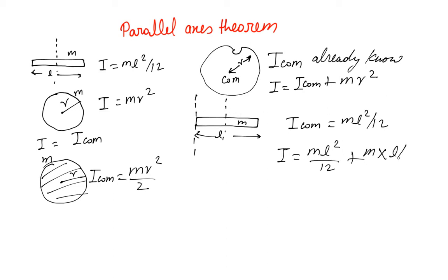That gives us ml²/12 plus ml²/4, and that gives us ml²/3. We already have derived this formula before. So once we know I_com, we do not have to re-derive I about this axis - all we have to do is use this formula and get the I about this axis.